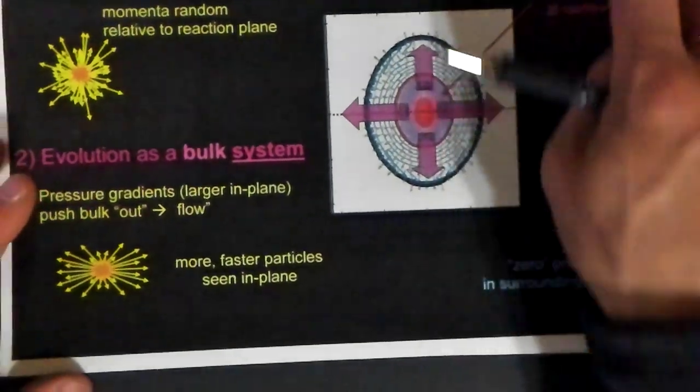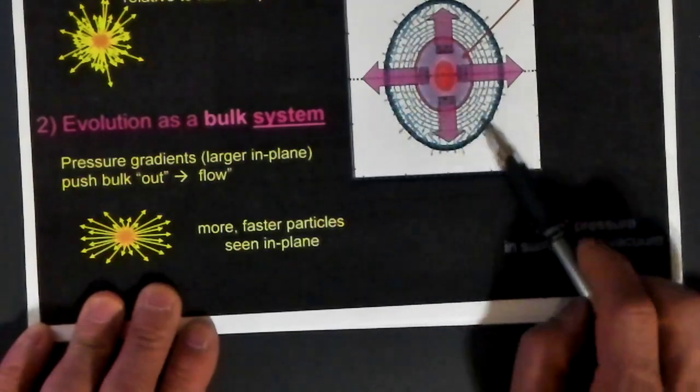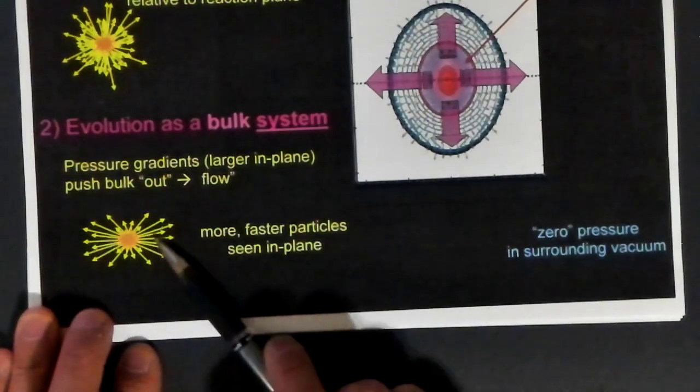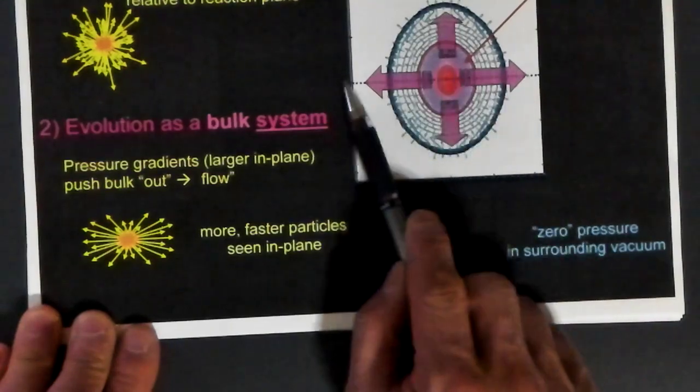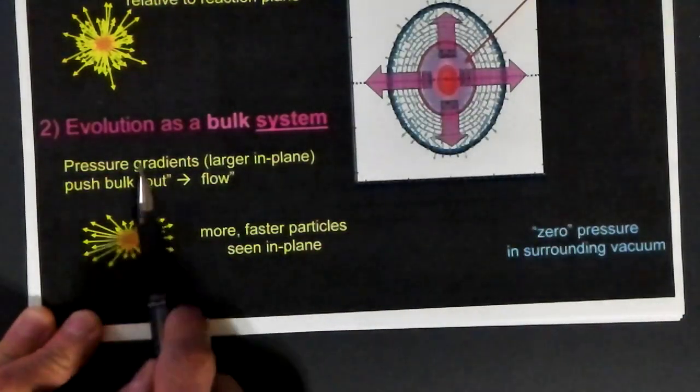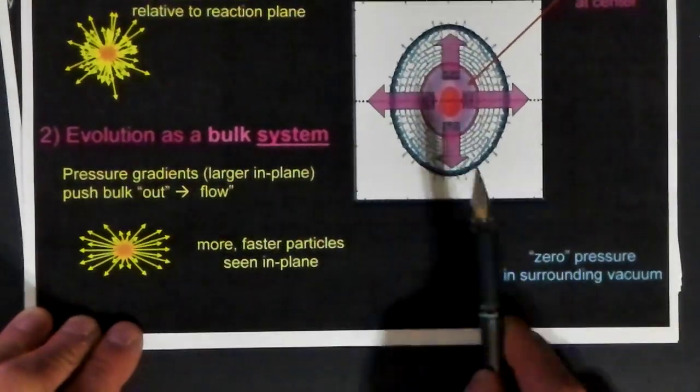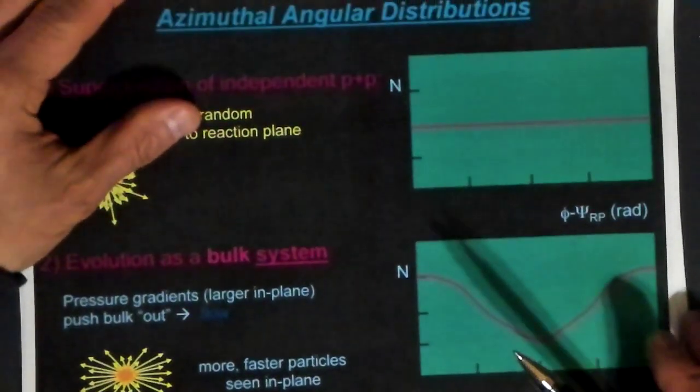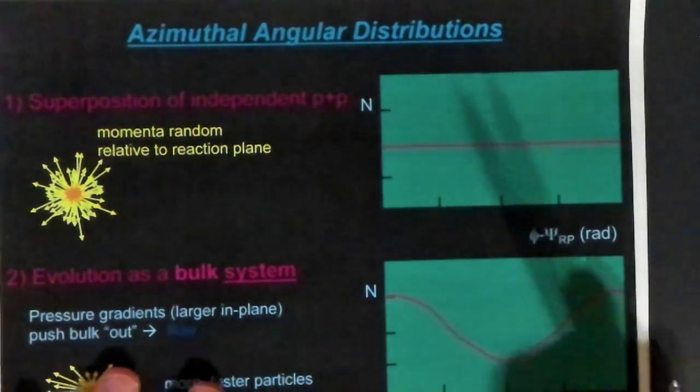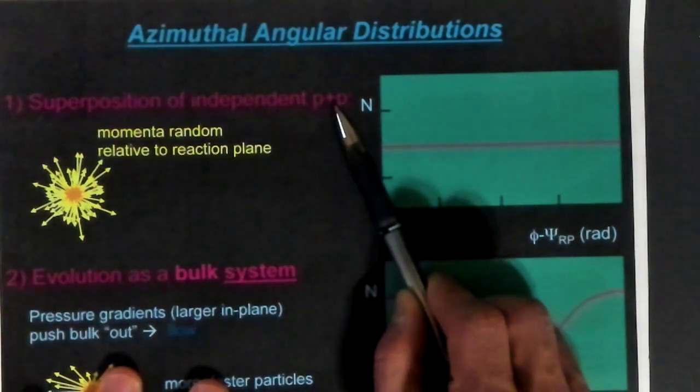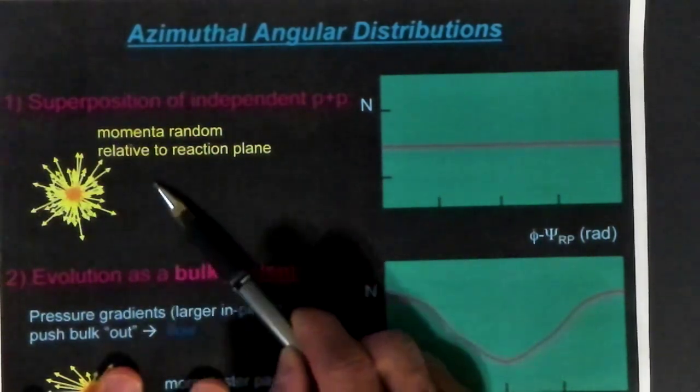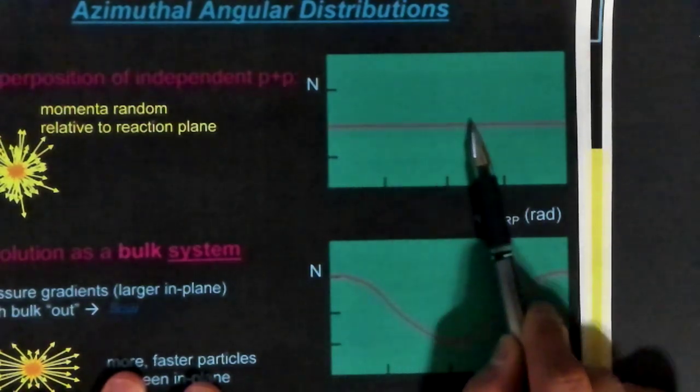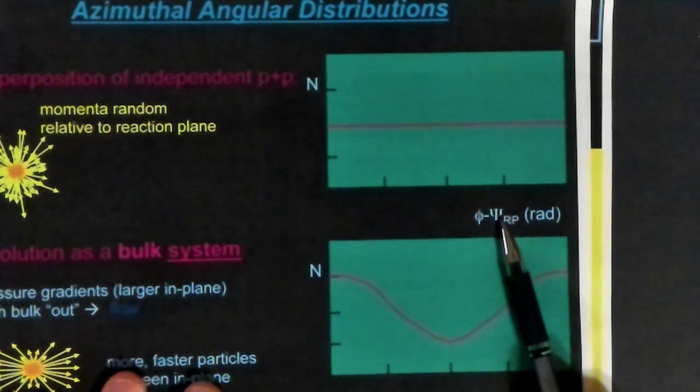Here is what you expect to see if we have this hydrodynamic model of a fluid. We would expect to see more fast particles or more particles in general streaming out along the reaction plane or phi equals zero, and fewer things coming along phi equals 90 degrees. For the independent particle-particle model, everything will be isotropic, and the distribution of the multiplicity would be flat. It would be independent of phi measured with respect to the reaction plane.